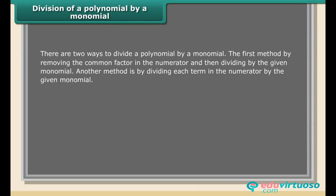There are two ways to divide a polynomial by a monomial. The first method: by removing the common factor in the numerator and then dividing by the given monomial. The second method: by dividing each term in the numerator by the given monomial.